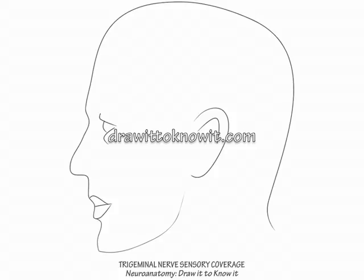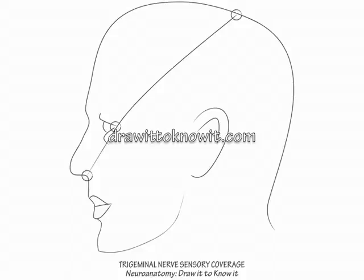First, draw a head. Mark a dot on the superior posterior curvature of the head, then at the corner of the eye, and then the tip of the nose. Now connect these dots and label the region superior anterior to it as division 1, the ophthalmic division.